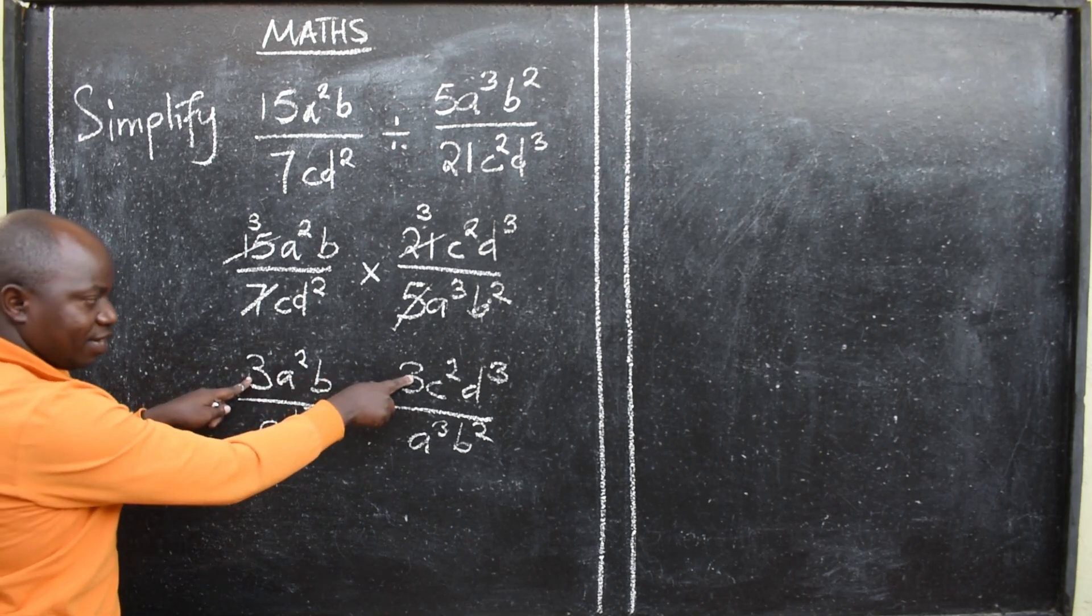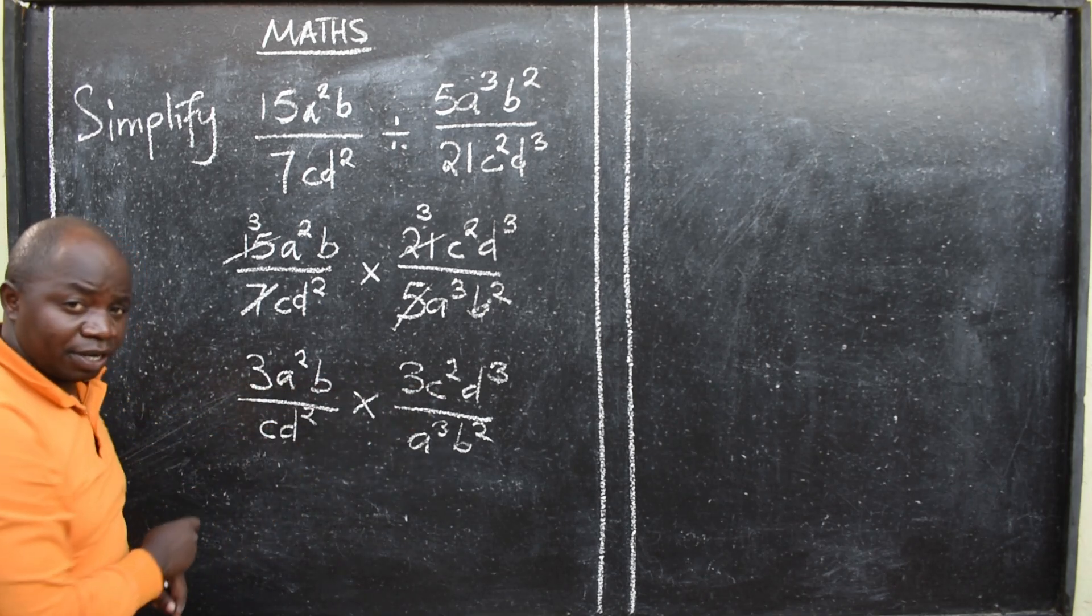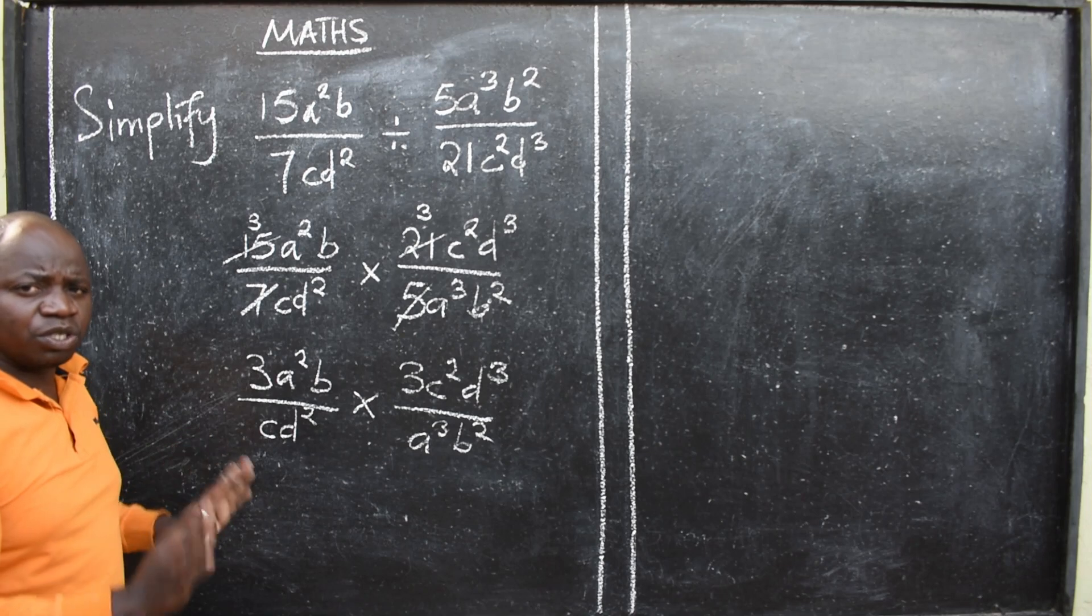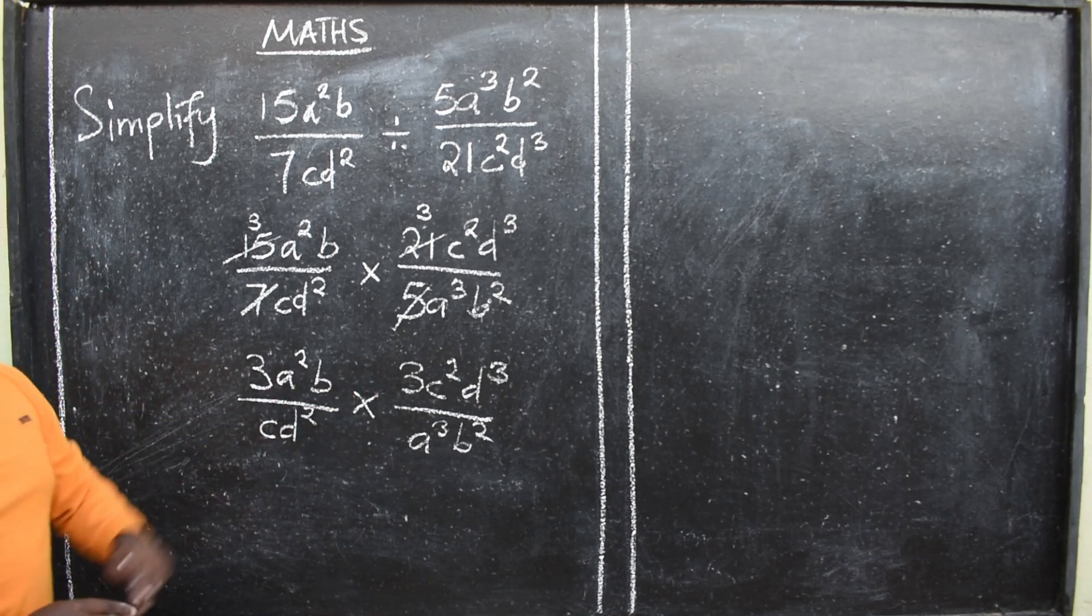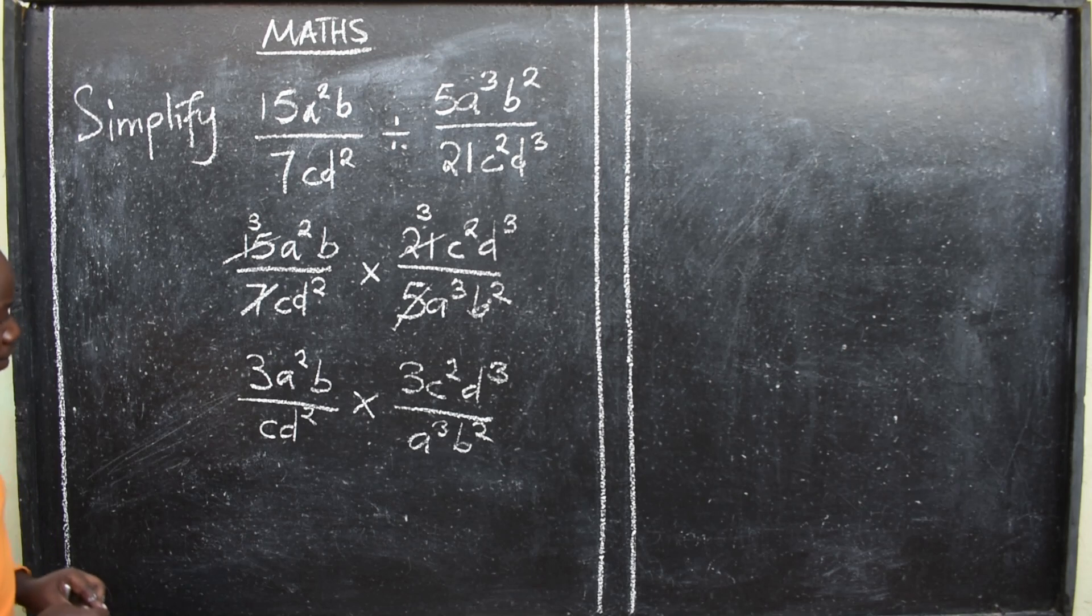You cannot cancel this 3 and 3. You can't. They are both numerators. You only cancel, reduce numerator and denominator. Now let me come to the variables, the letters.